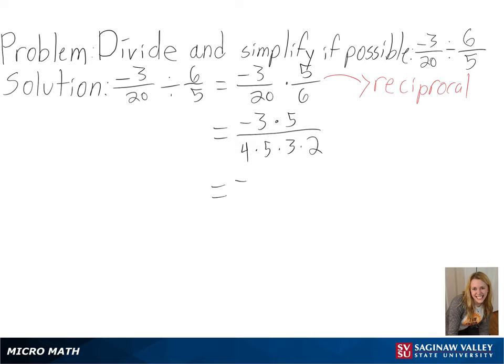Then we can simplify this. Since 3 over 3 is equal to 1, and 5 over 5 is equal to 1, and any number multiplied by 1 is itself.